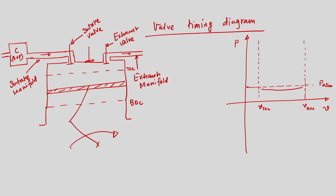When the piston is at BDC at the end of the intake stroke, the intake valve closes and the exhaust valve is already closed. The piston then moves from BDC to TDC to compress the inducted charge. The compression process is represented by a reversible adiabatic — that is, an isentropic process — during which volume decreases and pressure increases.